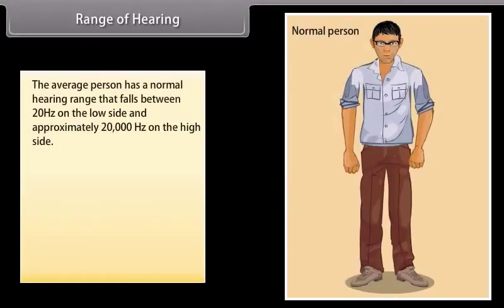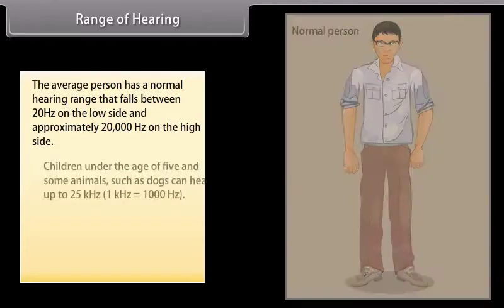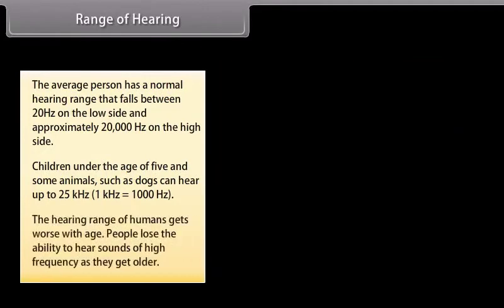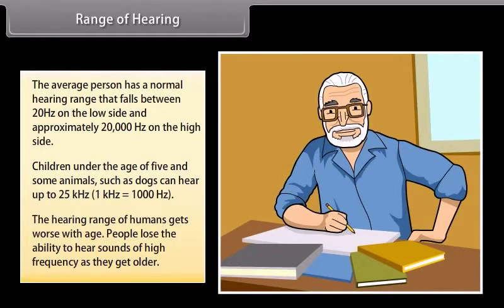Range of hearing. The average person has a normal hearing range that falls between 20 hertz on the low side and approximately 20,000 hertz on the high side. Children under the age of five and some animals such as dogs can hear up to 25 kilohertz. The hearing range of humans gets worse with age. People lose the ability to hear sounds of high frequency as they grow older.